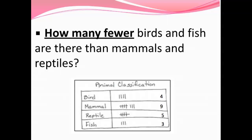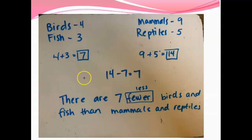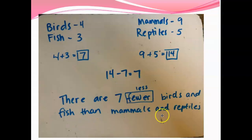How many fewer birds and fish are there than mammals and reptiles? This time we're adding up birds and fish first, and mammals and reptiles first. 'How many fewer' means less — how many more or how many fewer both mean we have to subtract. When I added birds and fish I got seven. When I added mammals and reptiles I got 14. So I did 14 minus seven to get seven — there are seven fewer birds and fish than mammals and reptiles. If those are confusing, go back and look at my work. Remember if you have questions you can always reach out to me.